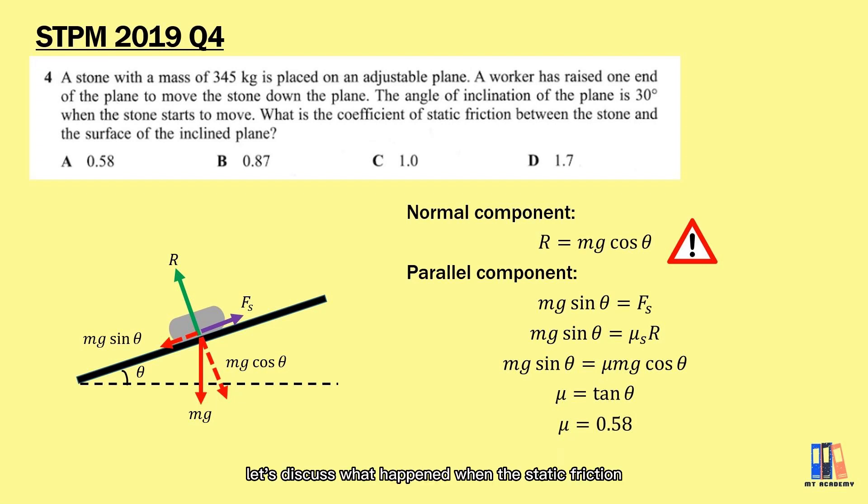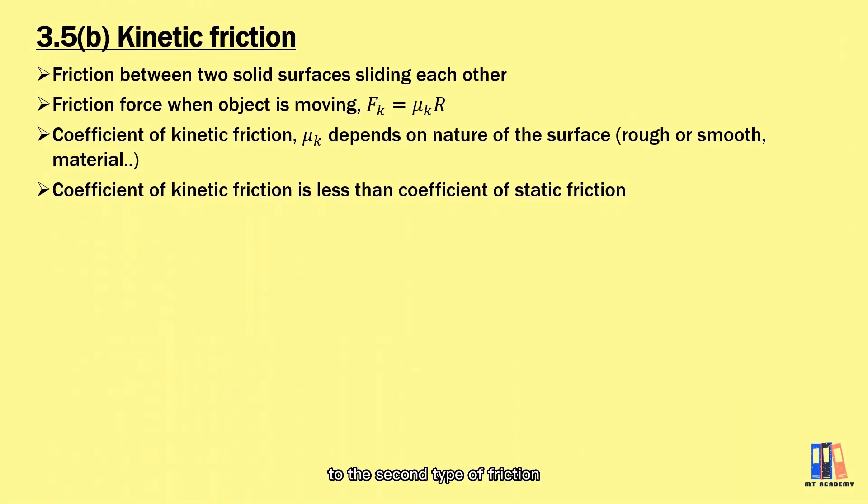Now let's discuss what happens when the static friction has been overcome. First, the friction will change to the second type of friction known as kinetic friction. It is actually the normal friction you have encountered in SPM physics, that is the friction force that occurs when the object is moving. It could be either in constant velocity, increasing velocity or decreasing velocity, depending on the forces and the question given. Kinetic friction has a similar equation as static friction and it also depends on the coefficient and the reaction force.